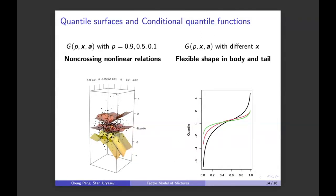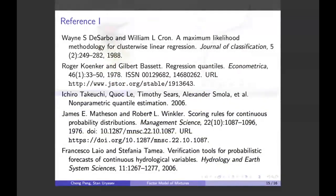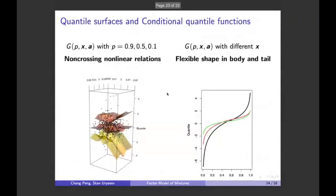If we fix a factor X and vary p, we can visualize the shape of the conditional quantile function. As we can see, this function is very flexible in both the body and tails of the quantile function. Of course, this flexibility depends on the function classes Q sub i and B sub i we choose. Here are some references — that's all I have for today.